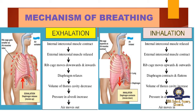During exhalation, the opposite happens. The internal intercostal muscles contract and the external intercostal muscles relax. The ribcage moves downward and the diaphragm also relaxes. The volume of the thoracic cavity decreases as the gas comes out. The pressure in the alveoli increases, pushing the air out from the inner organs, so air moves out through the nose.